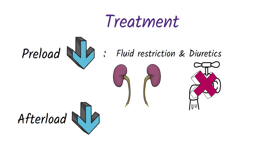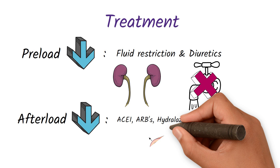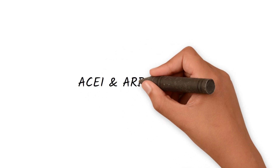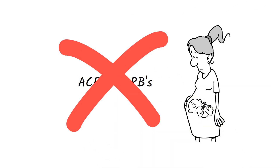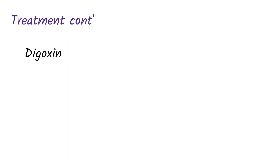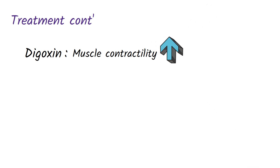To decrease the afterload and therefore increase the stroke volume — since afterload is inversely proportional to stroke volume — we use drugs like ACE inhibitors, ARBs, hydralazine, and isosorbide dinitrate. It is very important to remember that ACE inhibitors and ARBs are contraindicated in pregnancy. Also, because ventricular contraction is reduced in dilated cardiomyopathy, we use drugs like digoxin to increase muscle contractility and stroke volume.